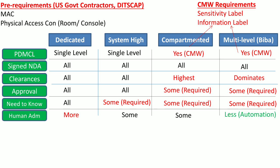The next attribute is administration. Administration is more complex, with less automation and more human involvement in dedicated security mode. Once the system is deployed in system-high, compartmented, or multi-level security modes, human involvement decreases and there is more automation. In multi-level security mode, there is the most automation and the least human administration.